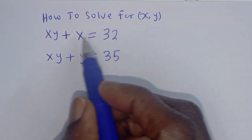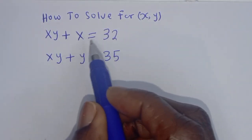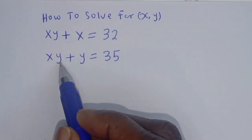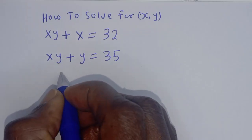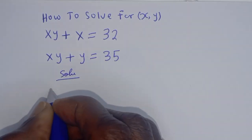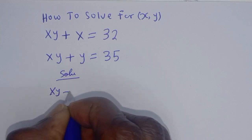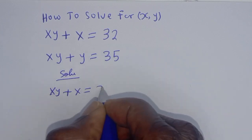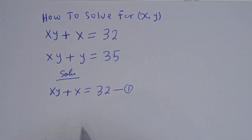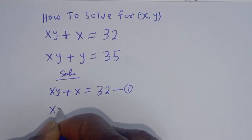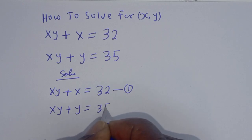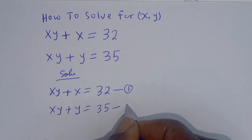Hello, how to solve for x and y from this given math problem: xy plus x is equal to 32 — let's call this equation 1 — and xy plus y is equal to 35 — let's call this equation 2.